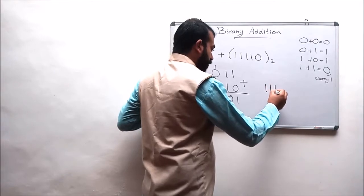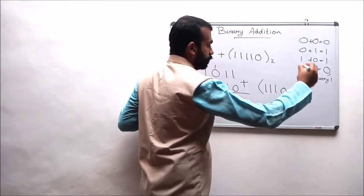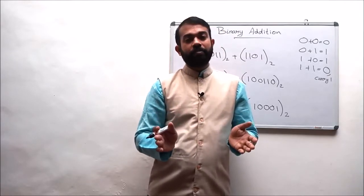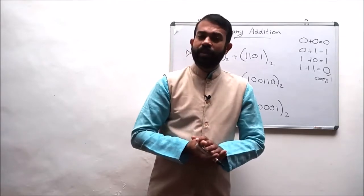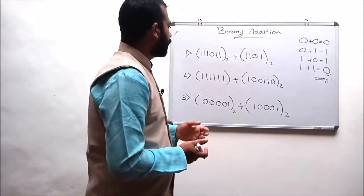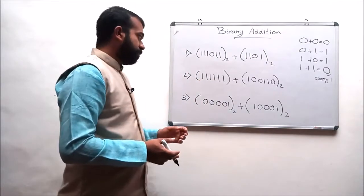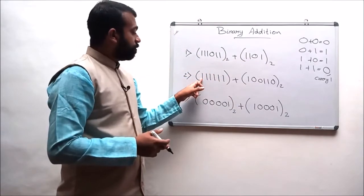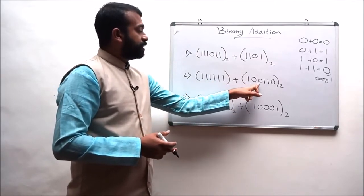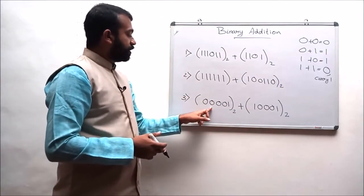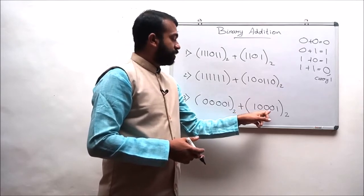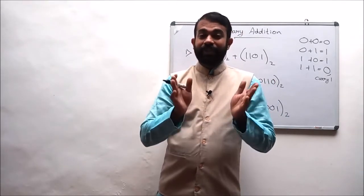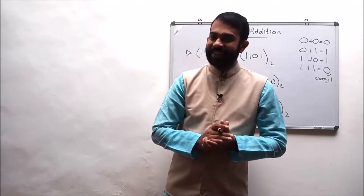So dear students, I hope you had understood this topic. In this lecture we discussed how to add two different binary numbers, or simply binary arithmetic. Kindly go through the assignment questions: add the following binary numbers — 1 1 1 0 1 1 with 1 1 0 1; the second question is 1 1 1 1 1 1 adding with 1 0 0 1 1 0; and the third question is 0 0 0 0 1 plus 1 0 0 0 1. In the upcoming lecture we will discuss how to add floating point or fractional binary numbers. See you soon — until then, goodbye, thank you, and all the best.